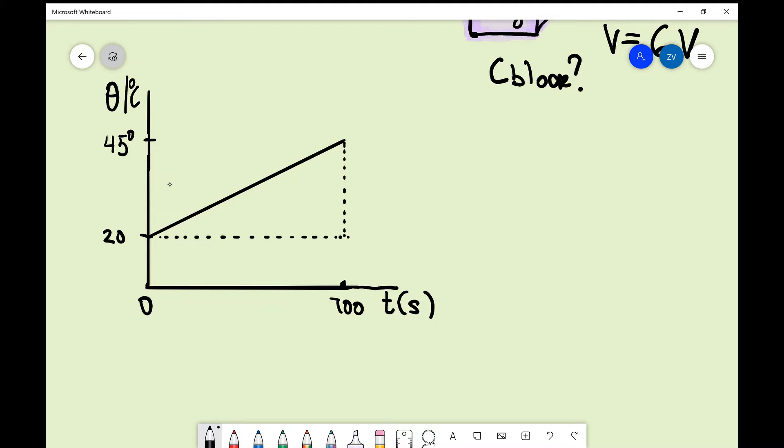So we know that the change in energy, let's call that delta E, is simply going to equal mc times our change in temperature delta theta.